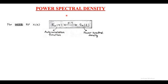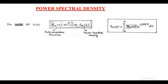Welcome once again. In this session we are going to discuss power spectral density. The power spectral density is simply defined as the Fourier transform of the autocorrelation function of input random process x(t), which is taken as a wide sense stationary process. The autocorrelation function r(τ) and its Fourier transform is S(f), called the power spectral density, mathematically represented as S(f) = ∫ r(τ) e^(−j2πfτ) dτ.